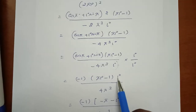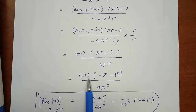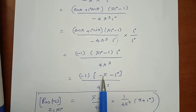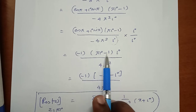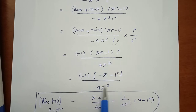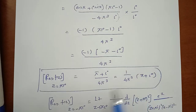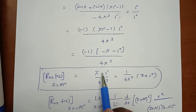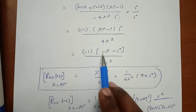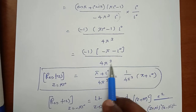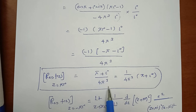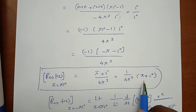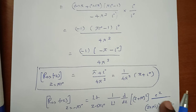Continuing: (−1)(πi − 1)(i) = (−1)(πi² − i) = (−1)(−π − i) = π + i. Dividing by 4π³ gives the first residue: Res[f(z), z = πi] = (π + i) / (4π³).